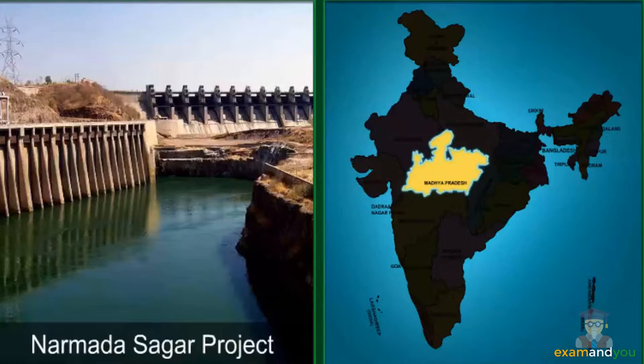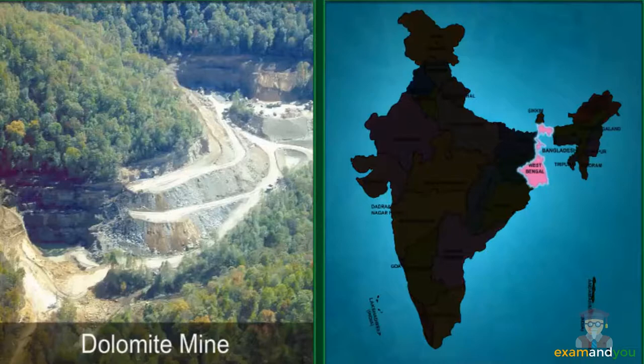Mining is another activity that contributes to deforestation. The Baksa Tiger Reserve in West Bengal faces serious threat from ongoing dolomite mining, which has caused habitat destruction and blocked the migration routes of several animals like the Indian elephant.